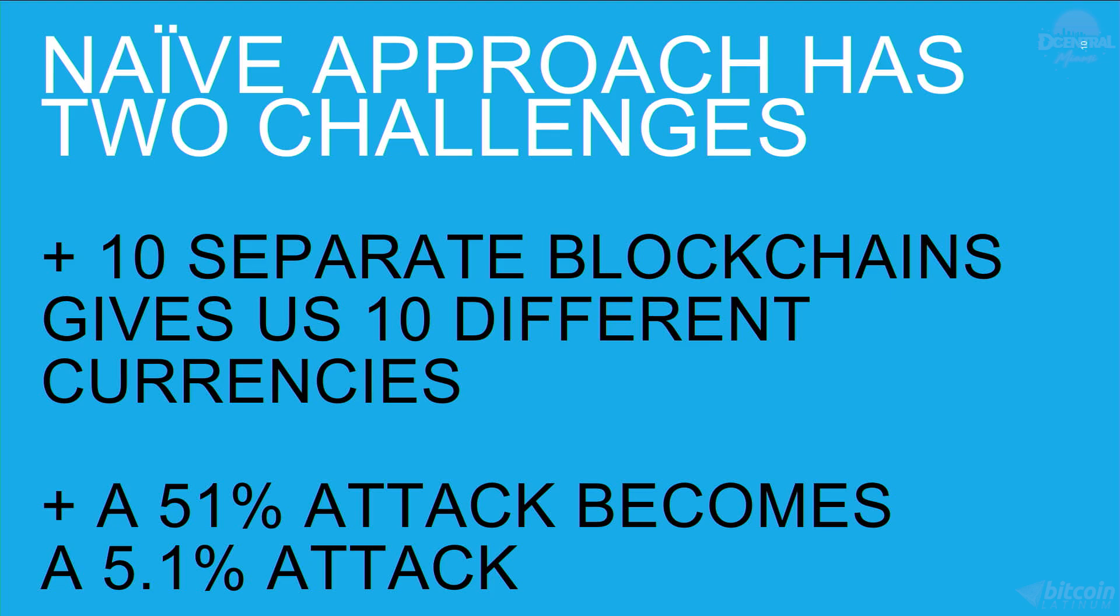This naive approach has two challenges. First of all, if you have 10 separate blockchains, that's 10 separate currencies and that's going to be cumbersome to work with. And secondly, a 51% attack becomes a 5.1% attack because you can attack one chain and all you need is half of the hash power of that chain.